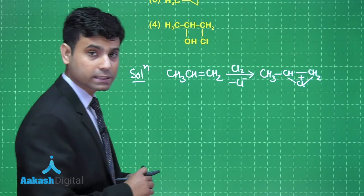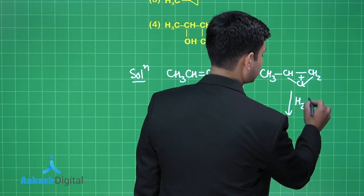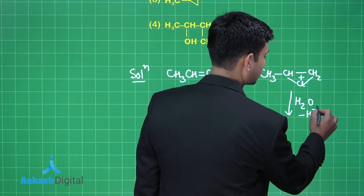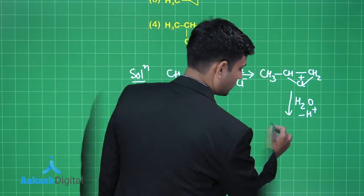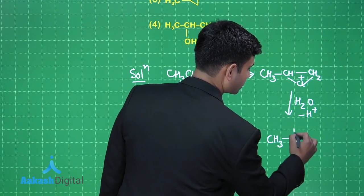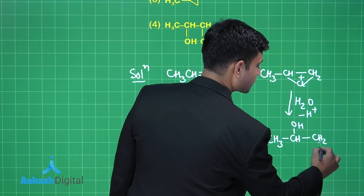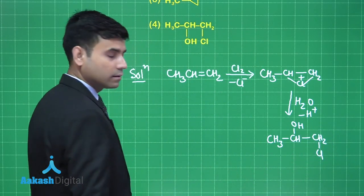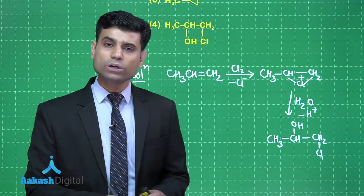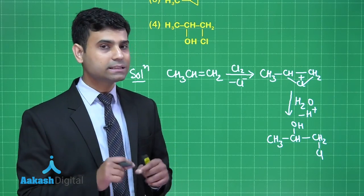Now addition of water takes place releasing H plus ion. You can remember like this: Markovnikov's addition of HOCl takes place where OH is negatively charged and Cl is positively charged. So this is the final product we have.